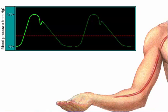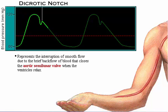The dichrotic notch represents the interruption of smooth flow due to the brief backflow of blood that closes the aortic semilunar valve.